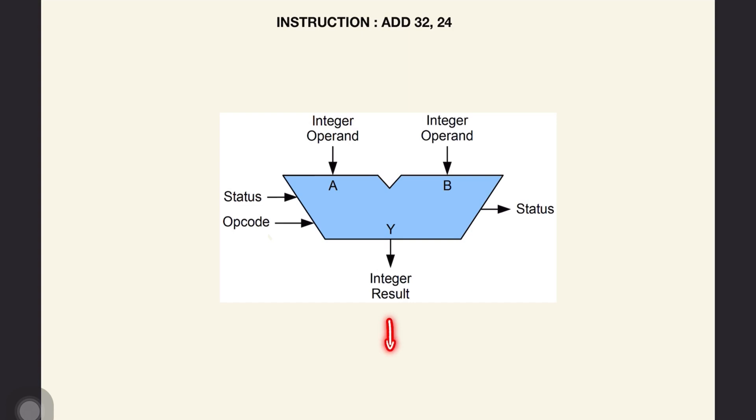The ALU gives out an integer result output and also a status output which are various signals like carry-in, carry-out, zero, negative, overflow, parity, etc.